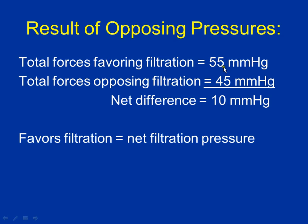For things favoring filtration: 55 plus 0 equals 55 mmHg. For things opposing filtration: 15 plus 30 equals 45. So negative 55 plus positive 45 gives you negative 10. Is that negative or positive 10? Negative. Do you want filtration? Yes, absolutely — having that negative number means you're pulling things out of the blood. The whole purpose of the kidney is to pull toxins and unwanted things out of the blood, get rid of them, and push them into the urine. It should favor filtration. We call that force the net filtration pressure, or NFP.